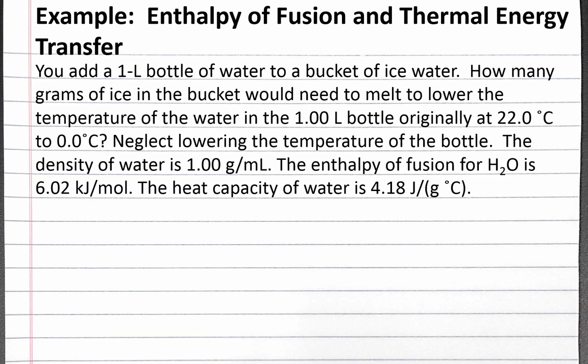In this example, we use the enthalpy of fusion with the thermal energy transfer equation. Our problem reads: you add a 1 liter bottle of water to a bucket of ice water. How many grams of ice in the bucket would need to melt to lower the temperature of the water in the 1 liter bottle, originally at 22 degrees Celsius, to 0 degrees Celsius? Neglect lowering the temperature of the bottle. The density of water is 1 gram per milliliter. The enthalpy of fusion for H₂O is 6.02 kilojoules per mole. The heat capacity of water is 4.18 joules per gram degrees Celsius.